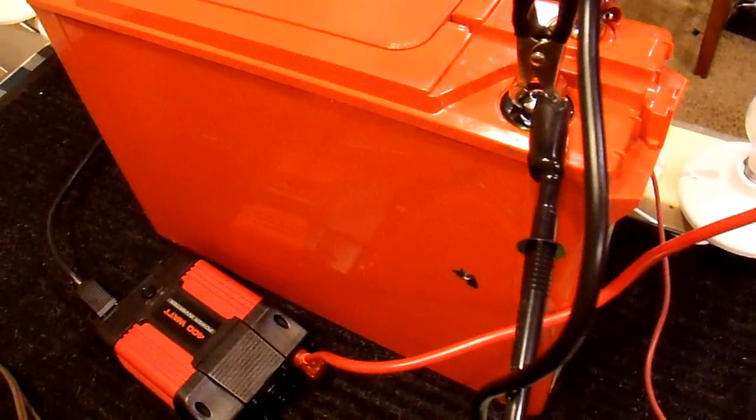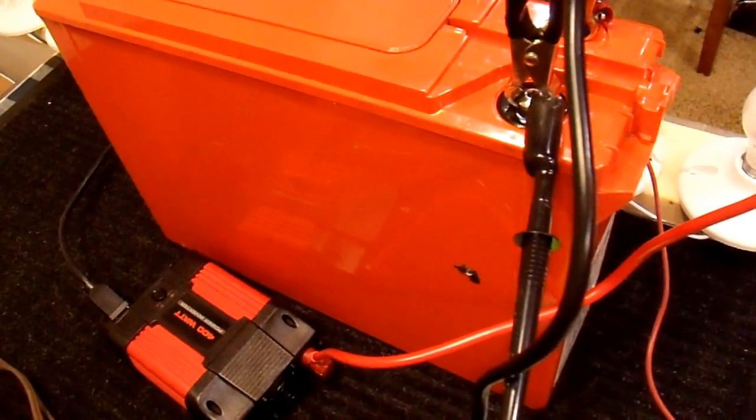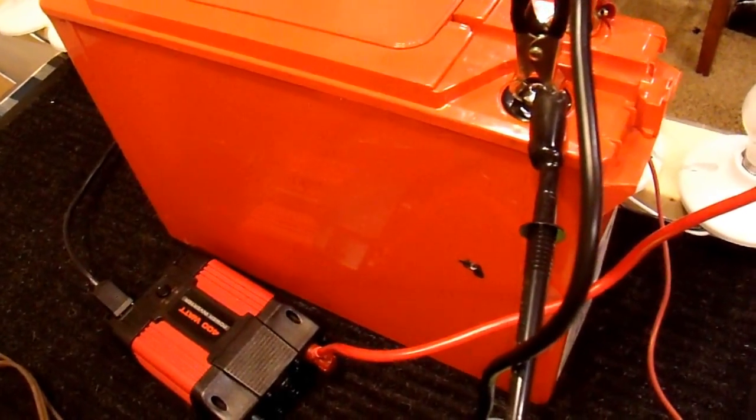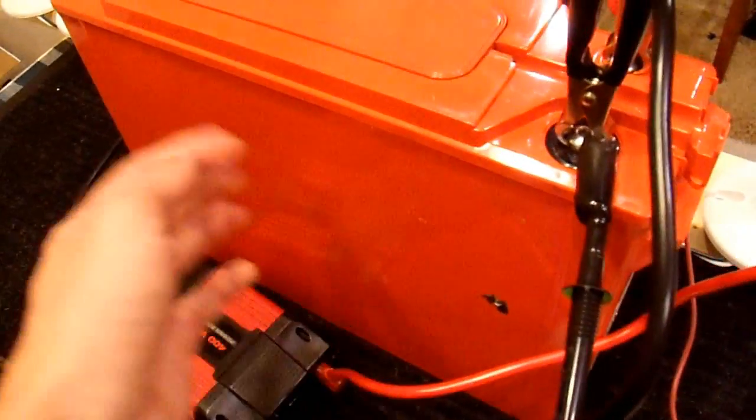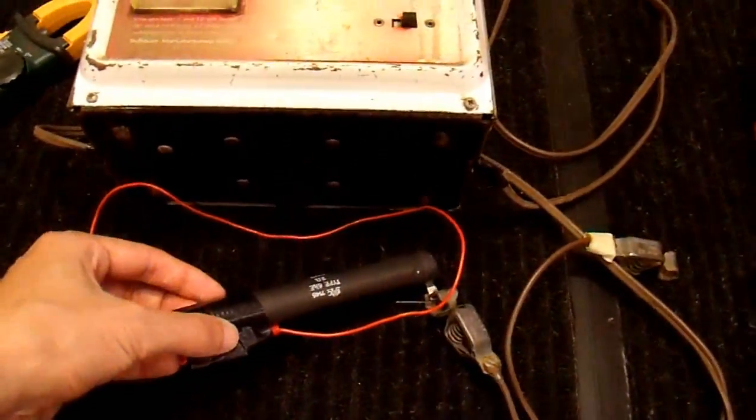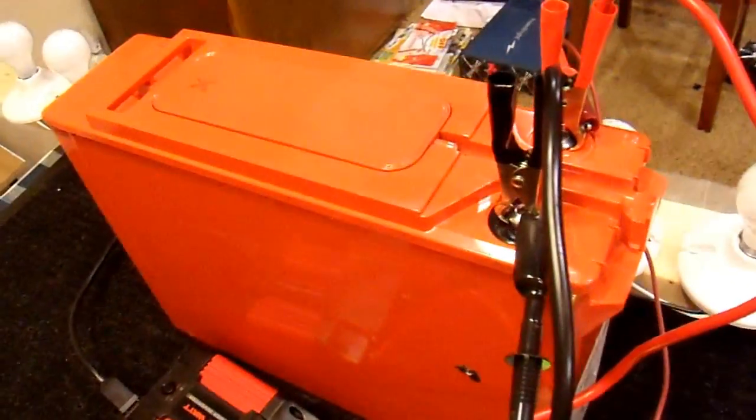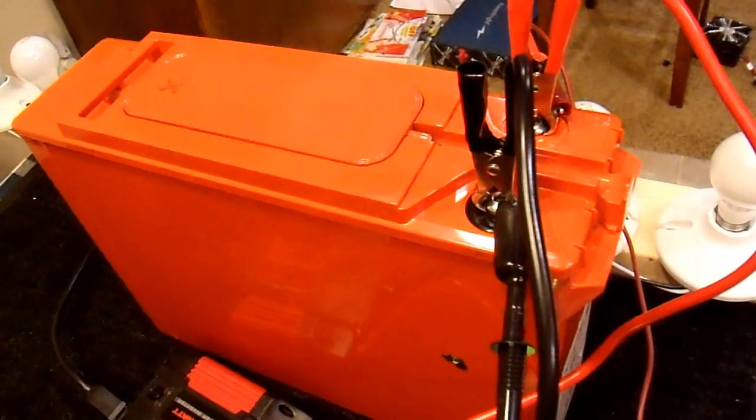it crept up to around three amps in total and then started dropping back down. At the point it started dropping back down, it outgassed quite a bit so I put the resistor back in for the next few days until the current stabilized at about 400 milliamps.